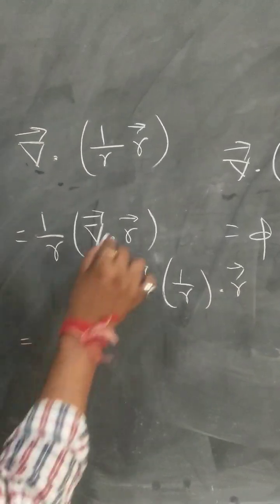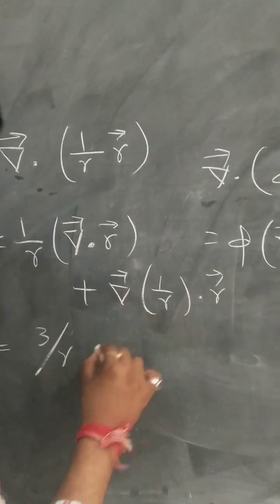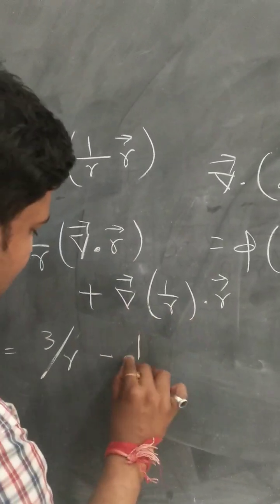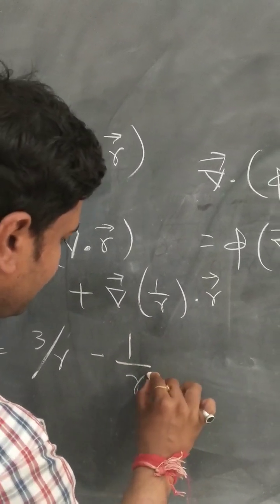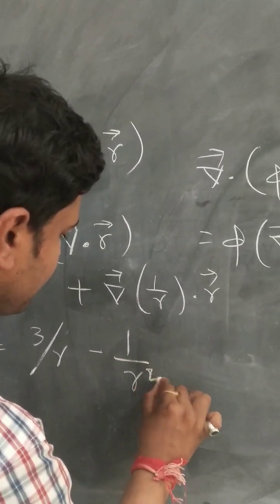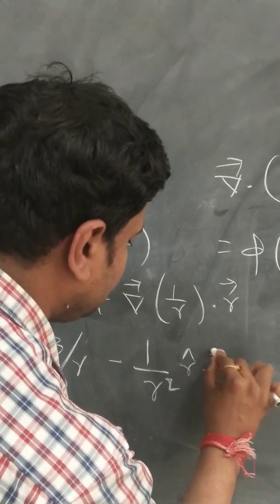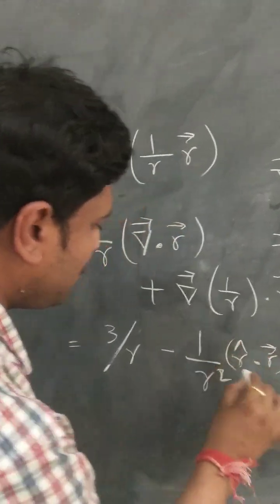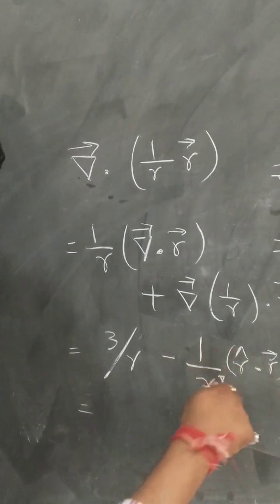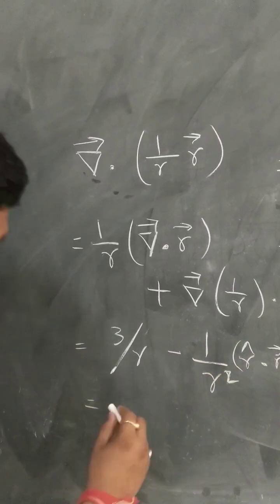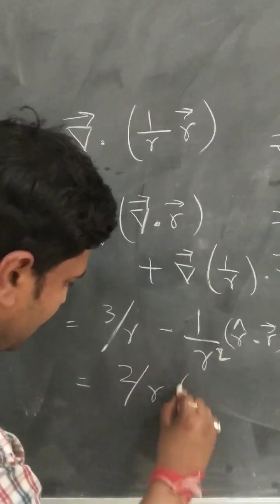The divergence of r⃗ is 3, so the first term gives 3/r. The gradient of (1/r) is −(1/r²) r̂, so the second term becomes −(1/r²) r̂ · r⃗. Since r̂ · r⃗ equals r, that term is −1/r. Therefore the result is 3/r − 1/r = 2/r.